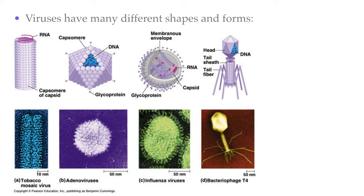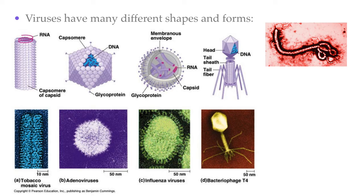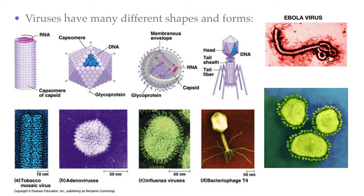Viruses come in many different types. There are millions of different types of viruses and they can vary tremendously in structure. On the top are drawings showing some of their main parts, and on the bottom are actual photographs taken with an electron microscope. Some of you may recognize the Ebola virus, and here's the coronavirus as seen under the electron microscope.